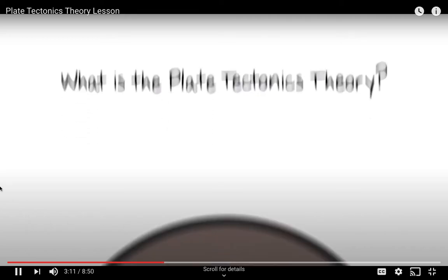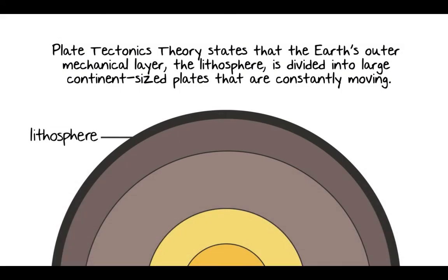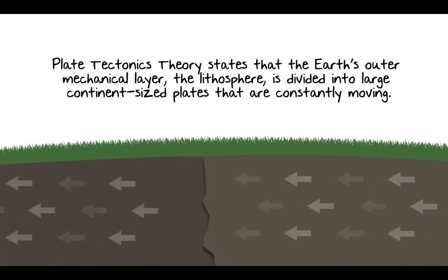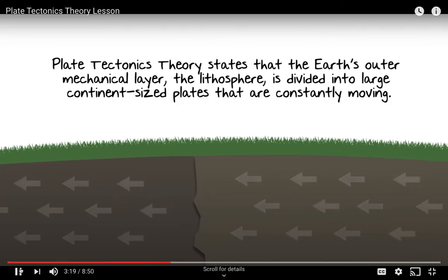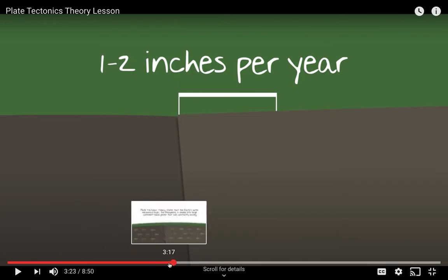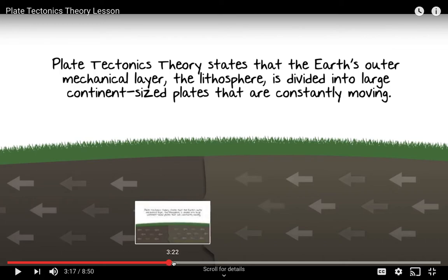The plate tectonics theory states that the Earth's outer mechanical layer, the lithosphere, is divided into large continent-sized plates that are constantly moving. How fast are they moving? Pretty slowly, actually — around one to two inches per year. So as you can see, the Earth underneath our feet is constantly moving, even though we can't feel it because it's moving so slowly.